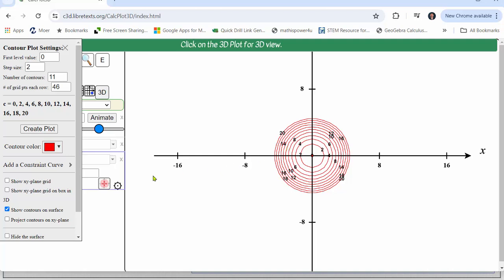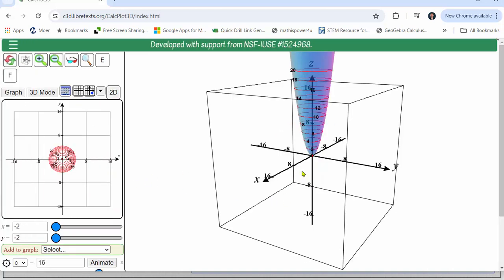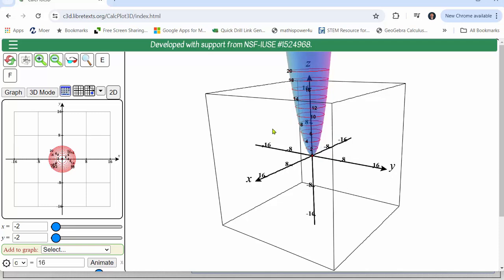And now let's look at the level curves on the actual surface. Again each of these red circles as well as this red point at the origin represent level curves which all together form a contour map.